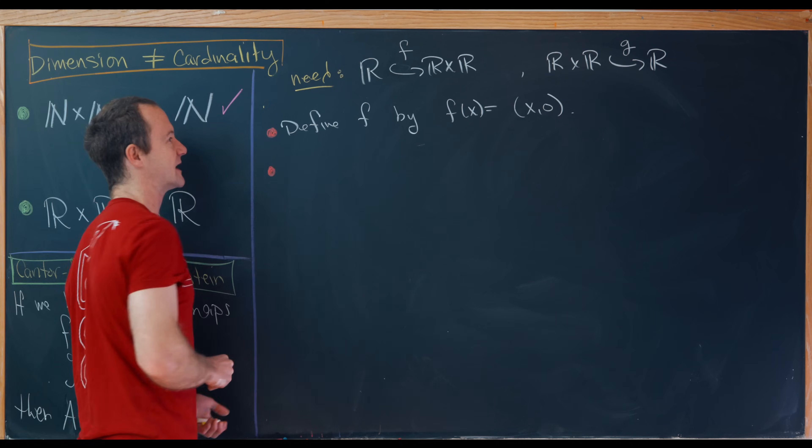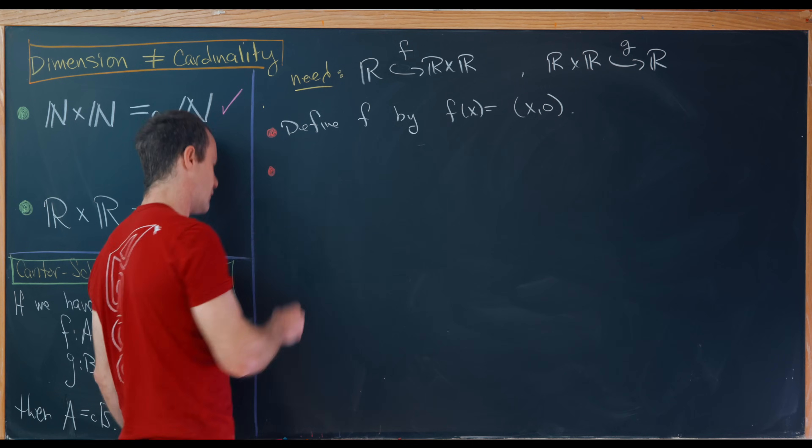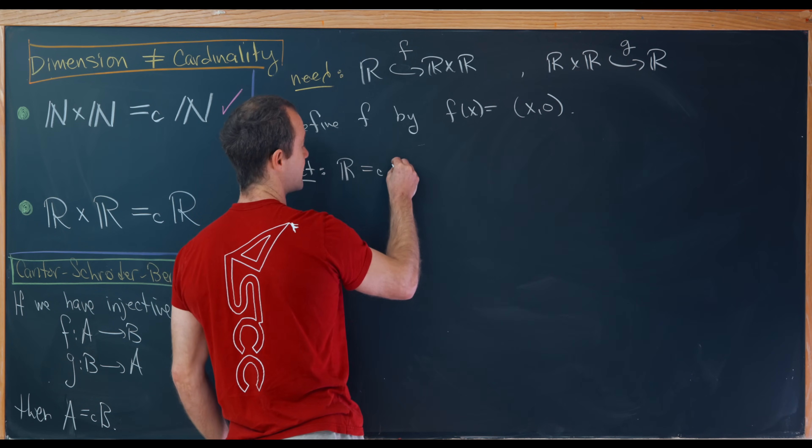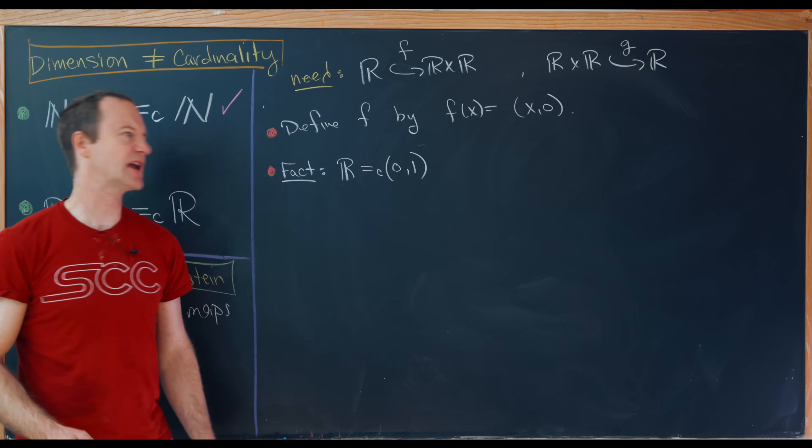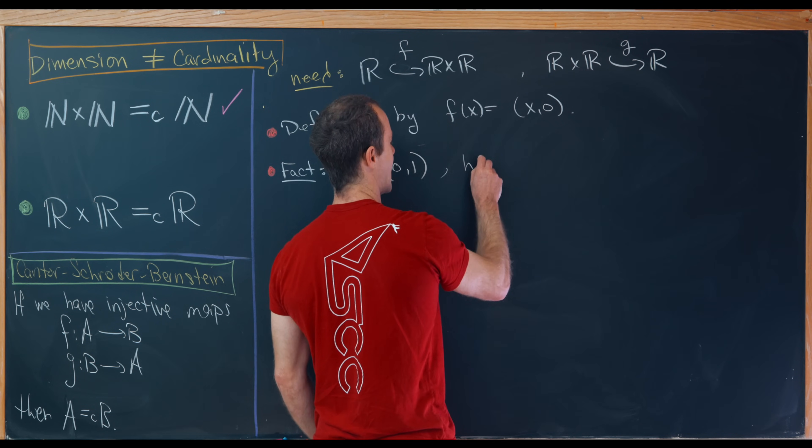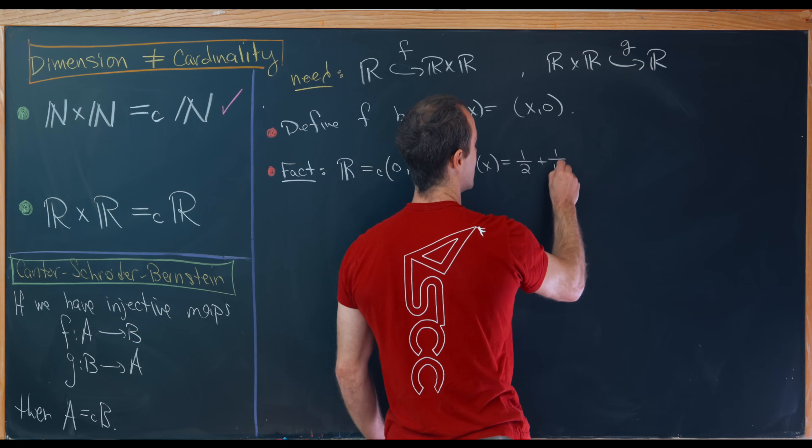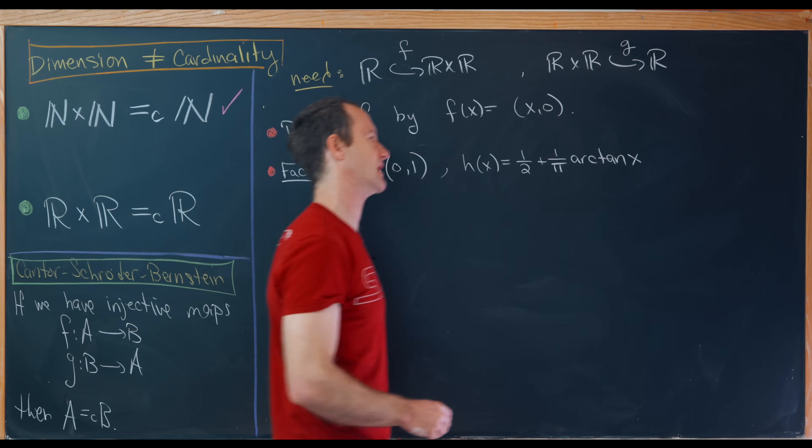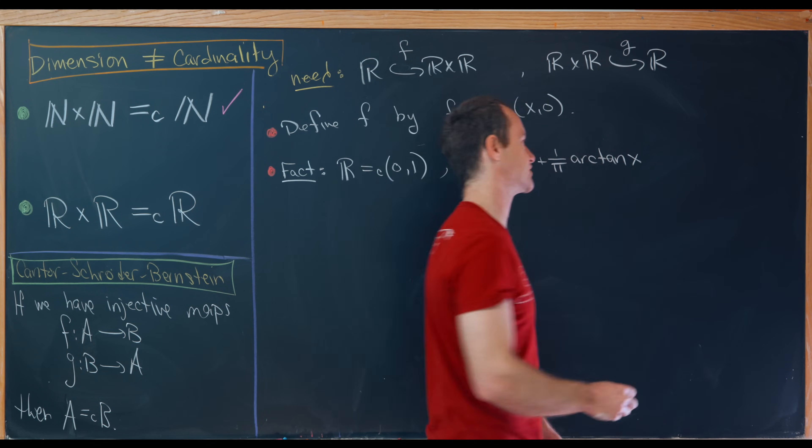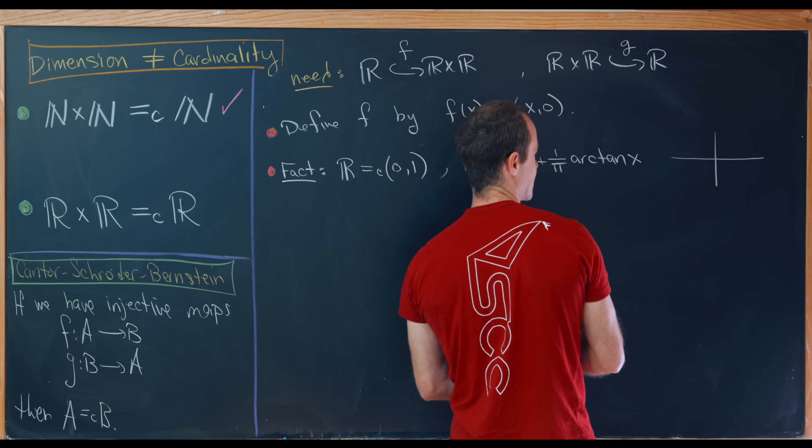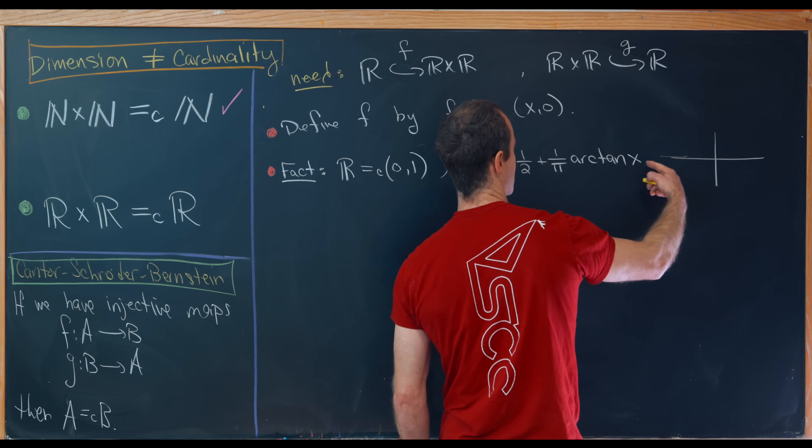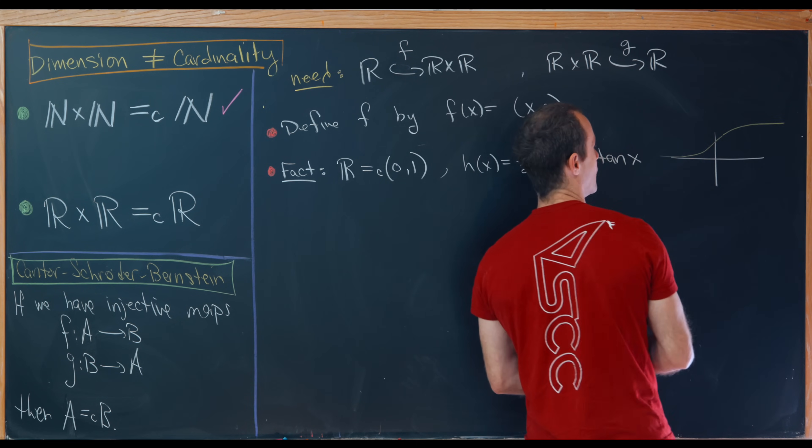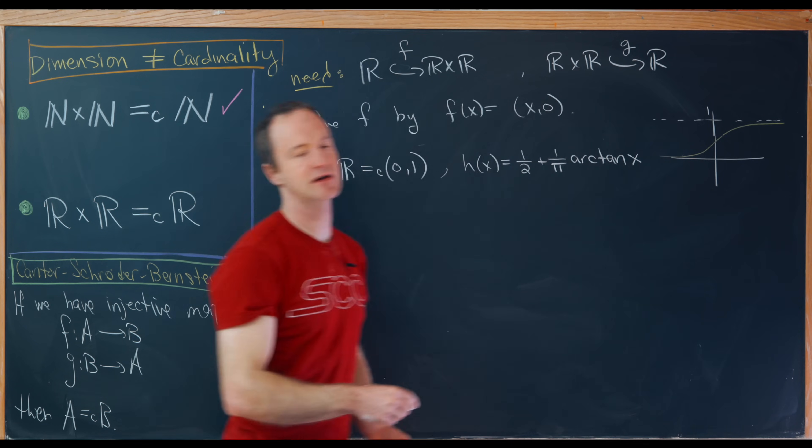Now defining G will be a little trickier. So how are we going to do that? Well, we're going to start off with the following fact: R is equinumerous with the interval (0,1). And if you'd like a function that does that, then we could easily define that as H(x) equals one-half plus one over π times the arctangent of x. So there are a bunch of functions that do this, but this is one of them. I think this is maybe my favorite just because it allows us to kind of review what the inverse tangent function does. So this gives us a graph that's something like this. So it's asymptotic to the horizontal axis, or the x-axis, or in other words y equals 0 to the left, and then it's asymptotic to y equals 1 to the right. So that clearly defines a bijection.